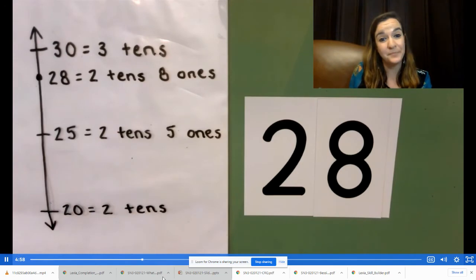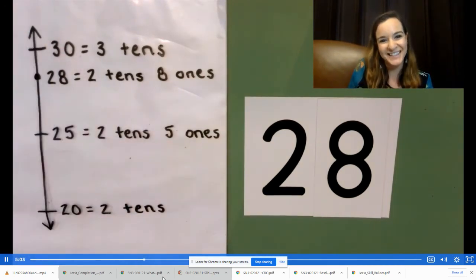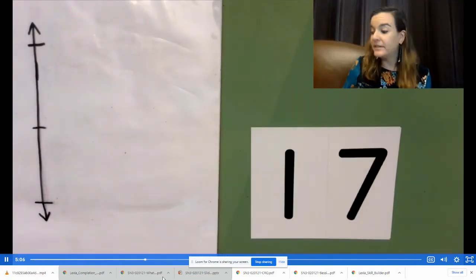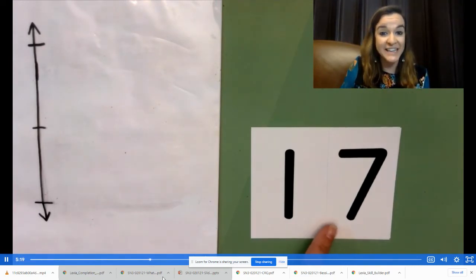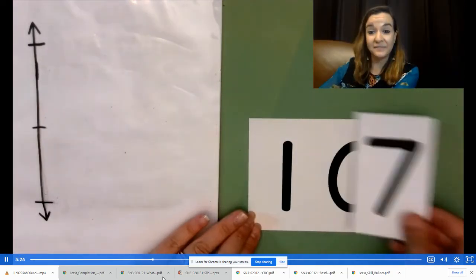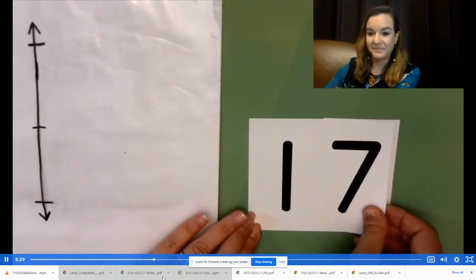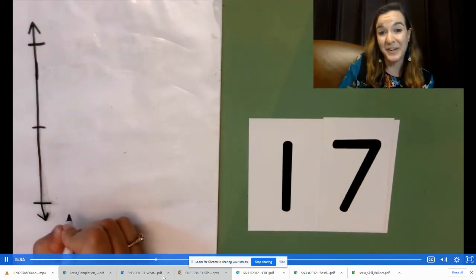Now we are going to round 17 milliliters to the nearest 10 milliliters. Let's begin the same way we began our first problem, by thinking how many tens are in 17 milliliters. Whisper to me. 1 ten. Let's record that as our bottom end point.